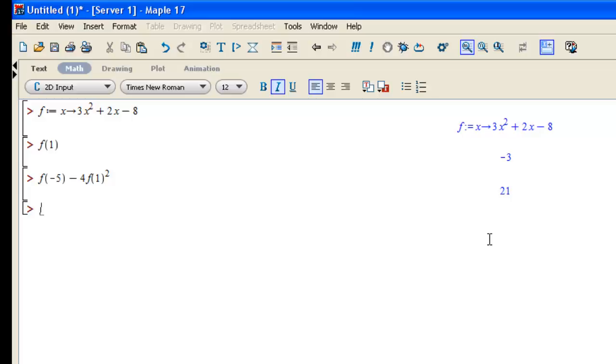I can find the zeros or x-intercepts of f. Remember the zeros or x-intercepts are all the places where f of x or y is equal to 0. So if I want to find the zeros or x-intercepts, I solve f of x is equal to 0. And this gives me the zeros or x-intercepts of f. And you can use solve on any equation.